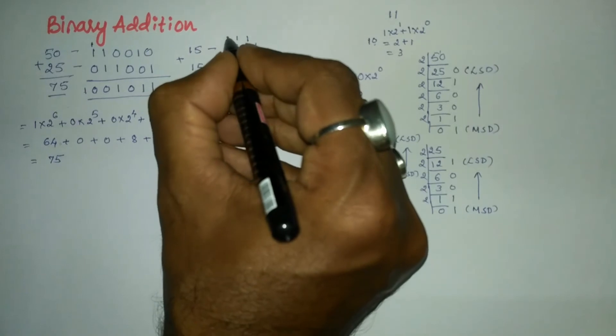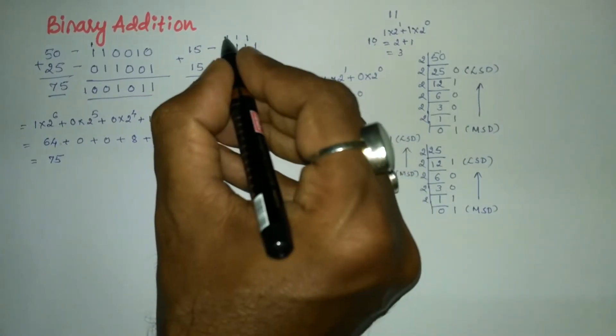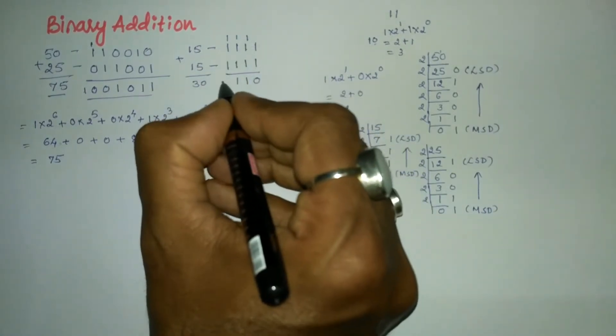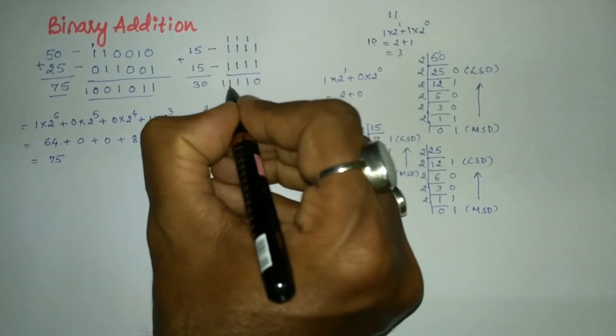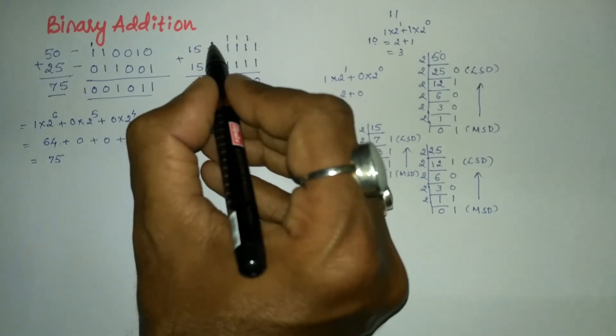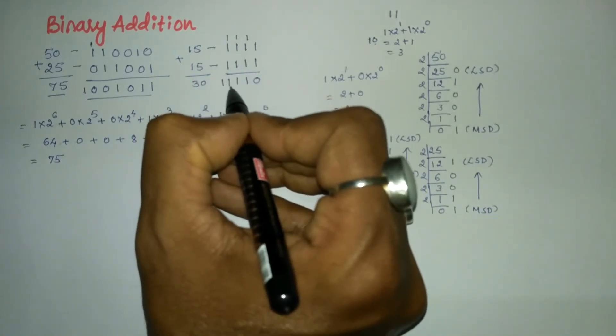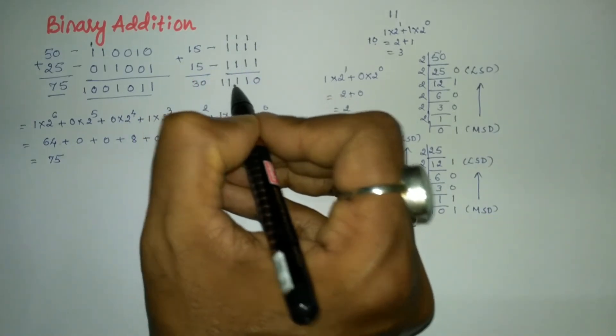Similarly, 1 plus 1 plus carry 1 is 3, written as 1 1, carry 1 and sum 1. For the last column, 1 plus 1 plus carry 1 is again 3, written as 1 1. Since there is no column to the left, we write 1 1 as the final result, giving the binary number 1 1 1 1 0.